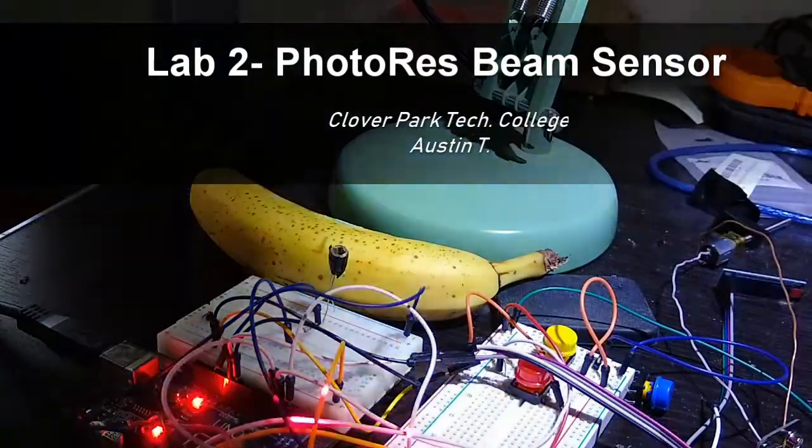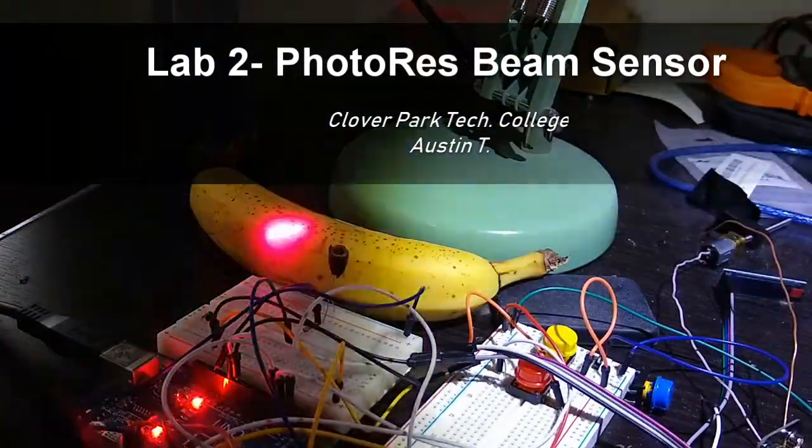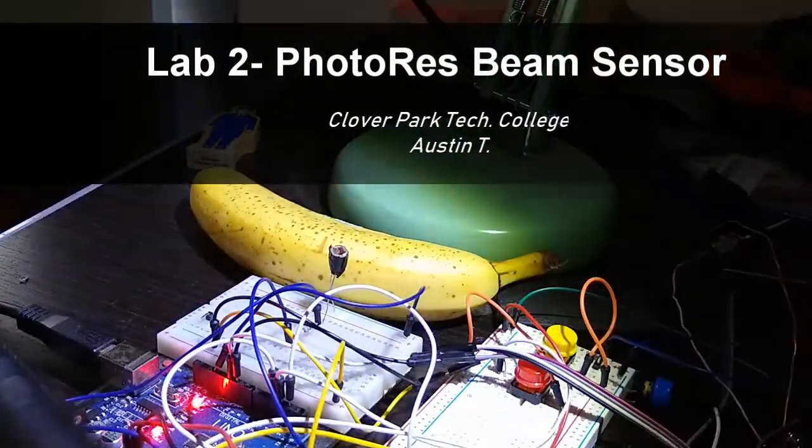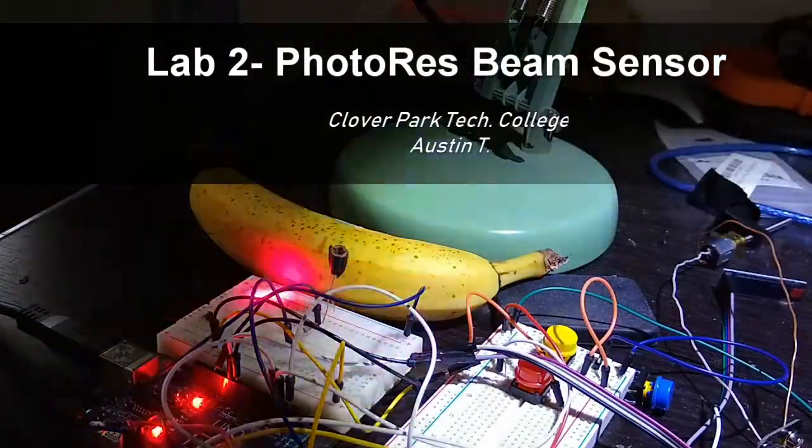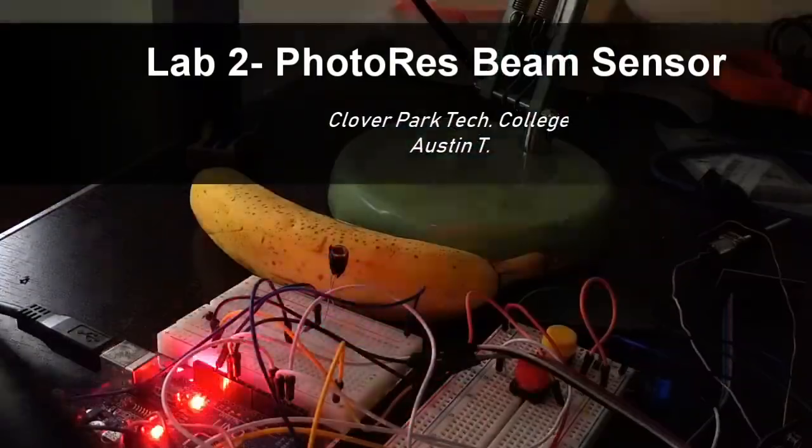Hey, how's it? This is Austin T, lab 2 for sensors and actuators. Today we're going to be using the photoresistor, lasers, lights, aluminum foil, and all kinds of stuff to explore sensor applications.